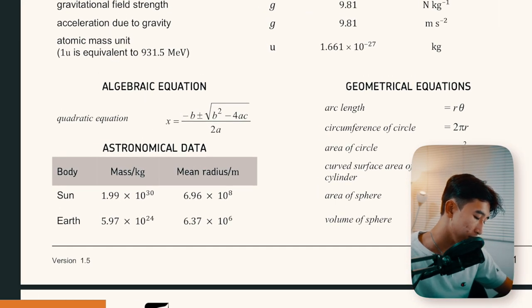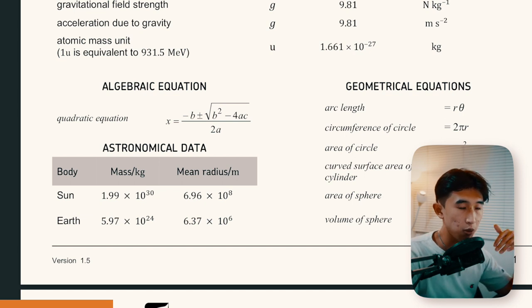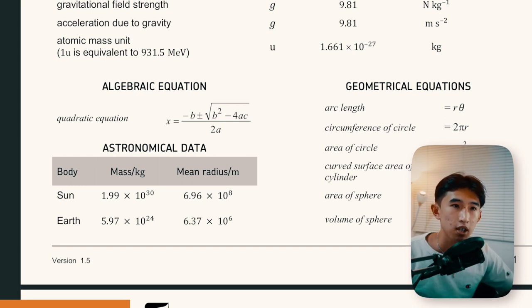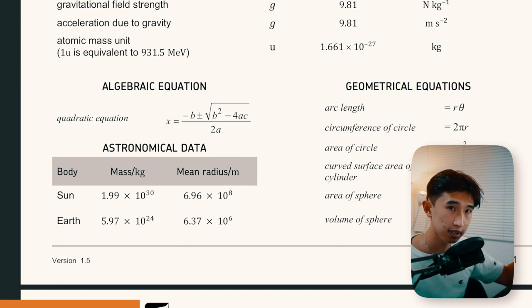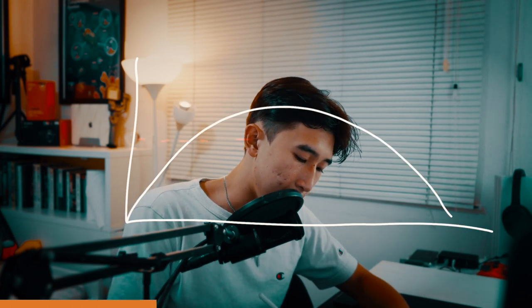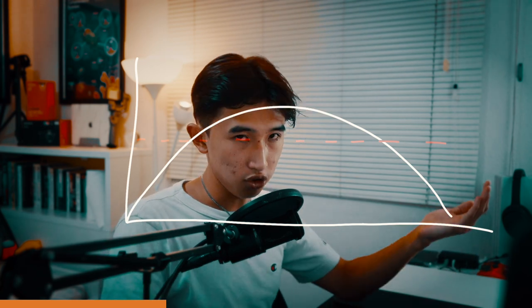The algebraic equation section gives you the quadratic equation. It wasn't used until recently — on a 2020 paper it appeared in a projectile question to find the time when an object reached a certain height, since a projectile reaches a given height at two points in time. You could always solve quadratics with the new A-level calculators, but it's important to show the subbed-in quadratic to gain a working mark, even if you use a quadratic solver.